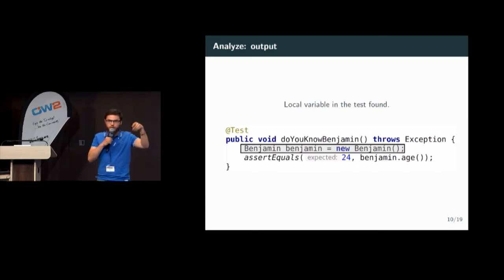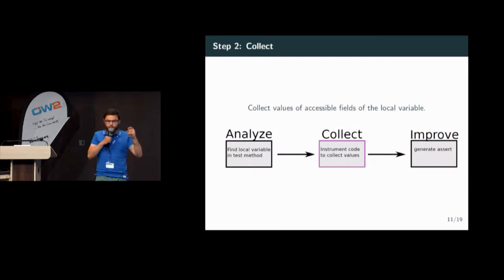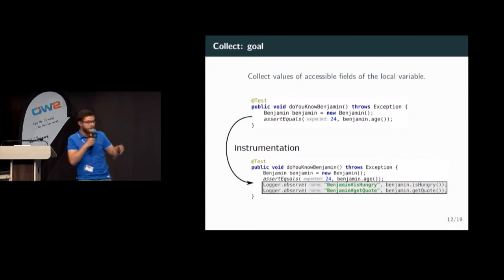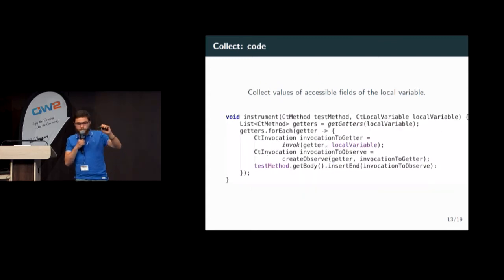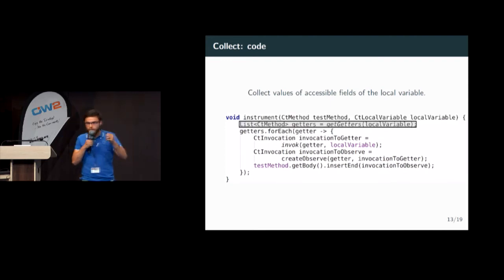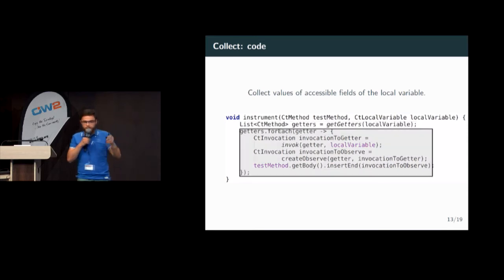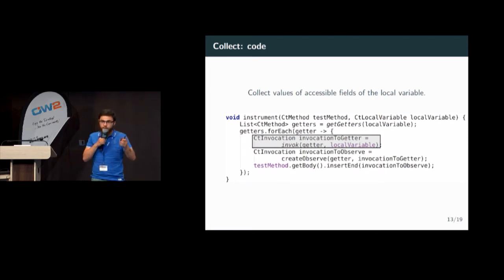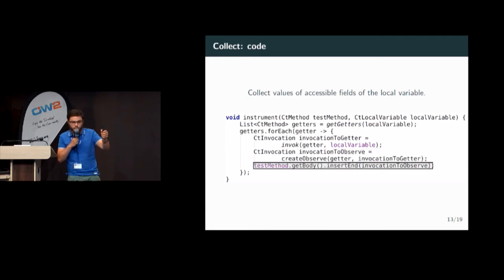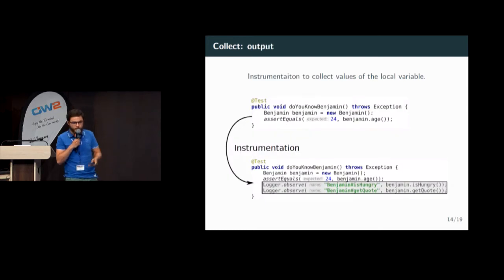We pass this local variable to the next step to collect all the values. We want to instrument the code and obtain invocations to the method logger.observe that will allow us to collect the values of the two getters. To do this, the instrument method works on a test method and the local variable. First, we collect all the getters of the local variable. Then for each getter, we create an invocation to the getter and an invocation to logger.observe with that getter invocation as parameter. We add the observe invocation at the end of the test method body.